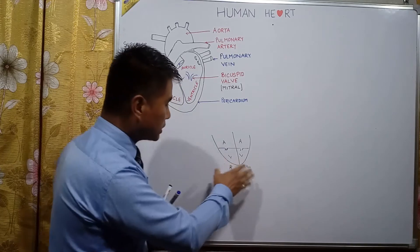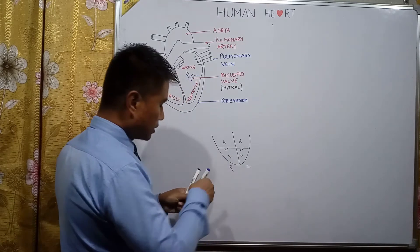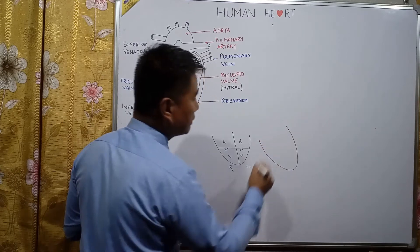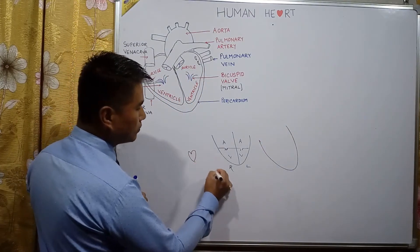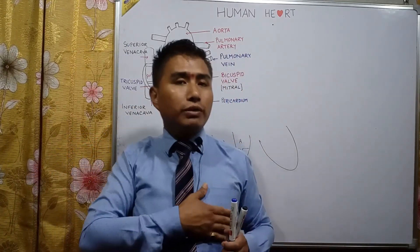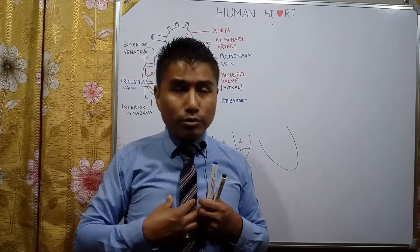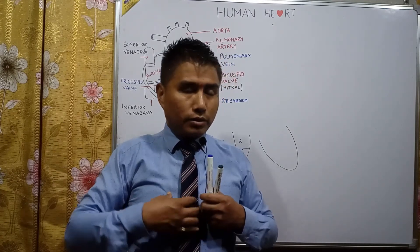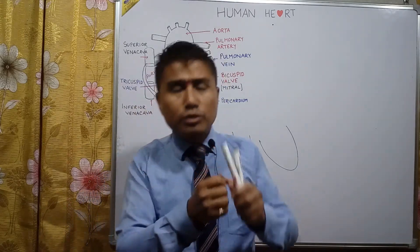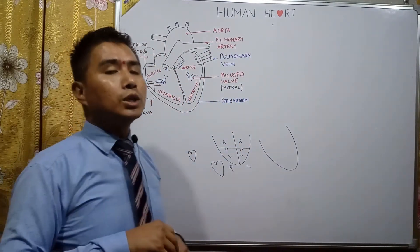The lower ventricular portion is tilted towards the left-hand side, which is why we feel the throbbing of the heart on the left side. Actually, the heart is situated in the middle region between the right and left lungs, but the ventricle is tilted towards the left.